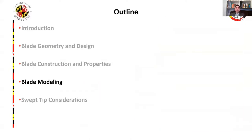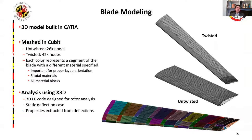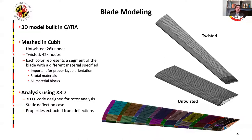With the blades fully characterized with respect to the design values, we also built a high-fidelity finite element model of the blades to accurately predict the behavior during testing. The model starts in CATIA, including each subcomponent of the blade, and then is meshed in Cubit. Each mesh used over 25,000 nodes, and in the bottom image you can see each zone represents a different segment of the blade, accounting for how the orientation of the carbon fiber plies change as it twists and wraps around the blade. This mesh was then loaded into X3D, a 3D finite element code designed for comprehensive rotor analysis. The frequencies can be extracted from the stiffness matrix, and the blade stiffnesses from the static deflections.